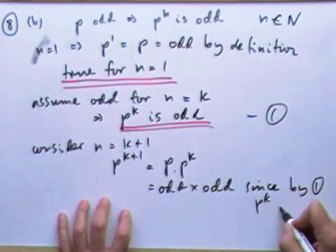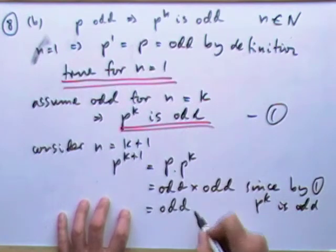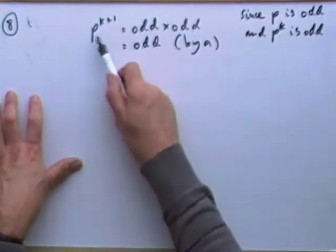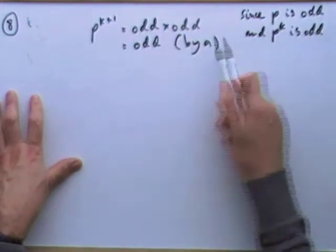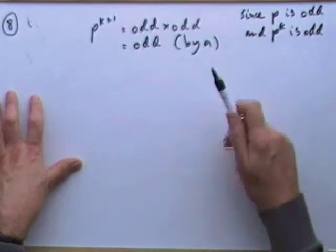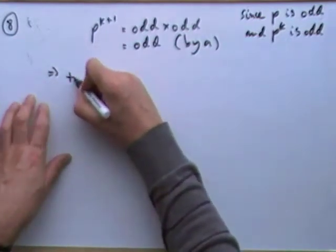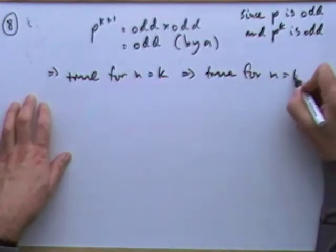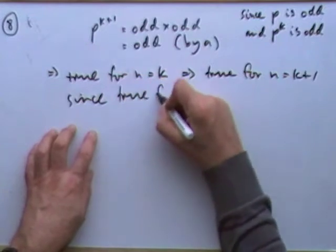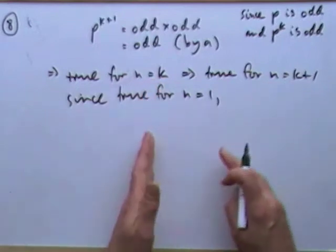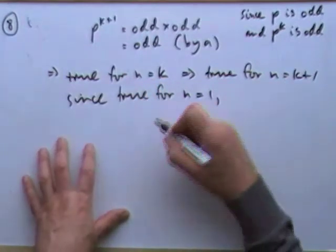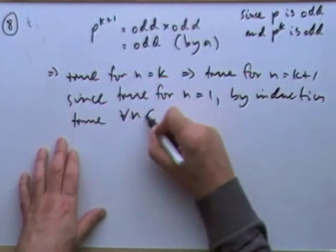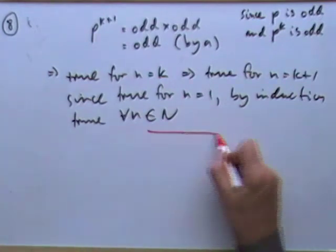Since p^k is odd, p × p^k is the product of two odd numbers, which is odd — proved in part a. So if it's true for n = k, it follows it's true for n = k + 1. Since it's true for n = 1, by the stepping-stone principle, it must be true for all positive integers n. That was question eight.